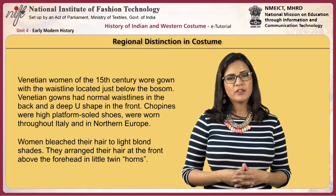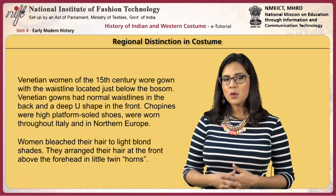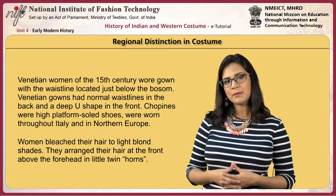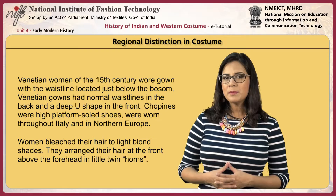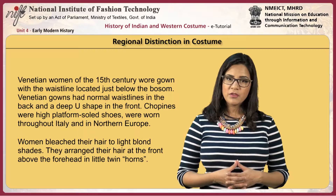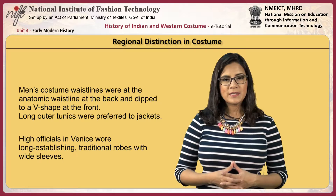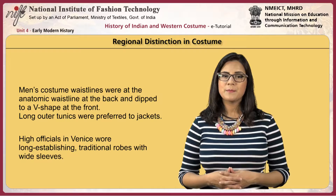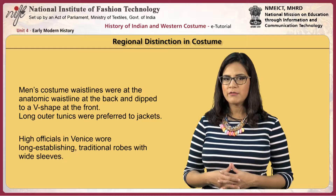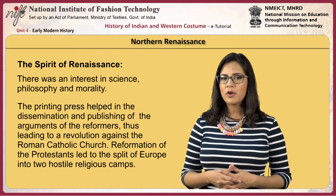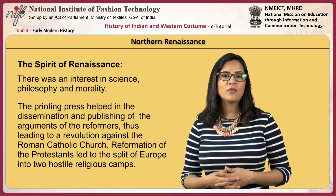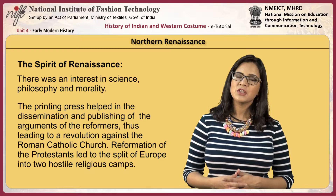Costumes varied according to different regions. Venetian women of the 15th century wore gowns with the waistline located just below the bosom. Venetian gowns had normal waistlines in the back and a deep U shape in the front. Chopines were high platform shoes worn throughout Italy and in Northern Europe. Women bleached their hair to light blonde shades and arranged it at the front above the forehead in little twin horns. Men's costume waistlines were at the anatomical waistline at the back and dipped to a V at the front. Long outer tunics were preferred to jackets. High officials in Venice wore long establishing traditional robes with wide sleeves. During the Northern Renaissance there was an interest in science, philosophy and morality. The printing press helped in the dissemination of the arguments of the reformers, leading to a revolution against the Roman Catholic Church. Reformation of the Protestants led to the split of Europe into two hostile religious camps.